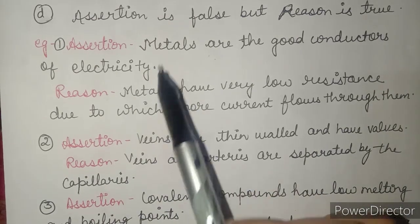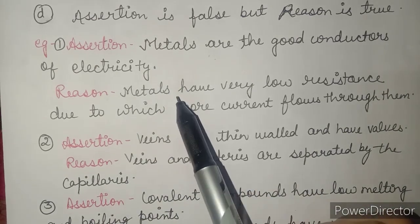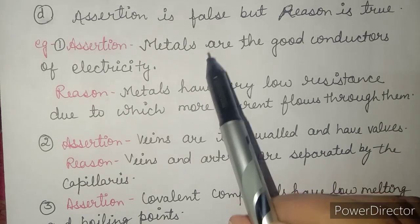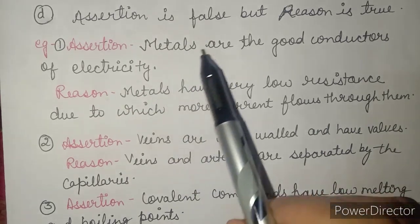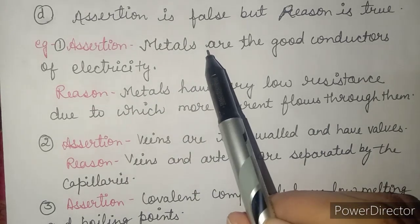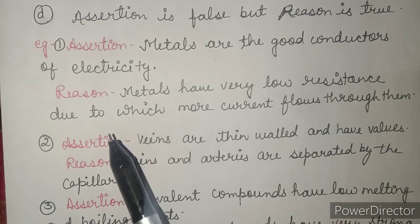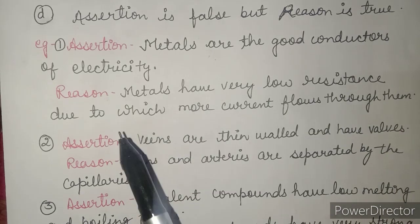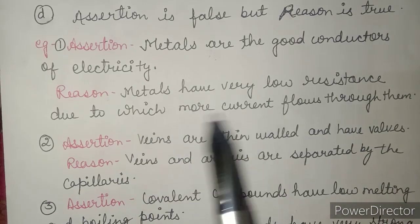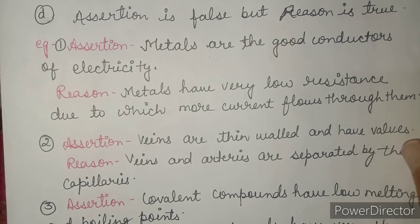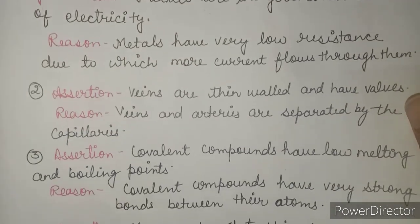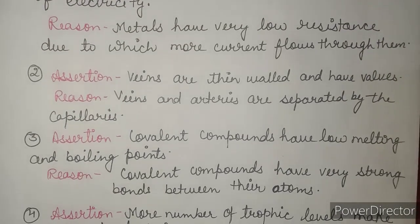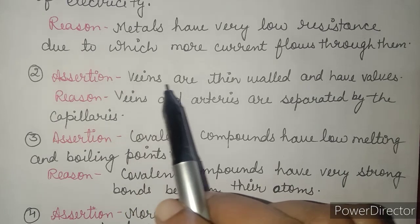Here, the reason is correct and the assertion is also correct, because metals are good conductors of electricity — for example, aluminum or copper is used for electrical connections. Both things are correct and the reason is correctly describing the assertion, so option A is correct.